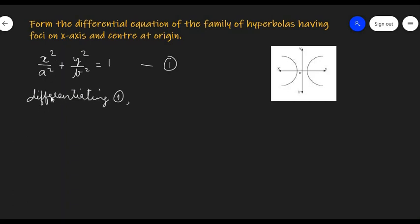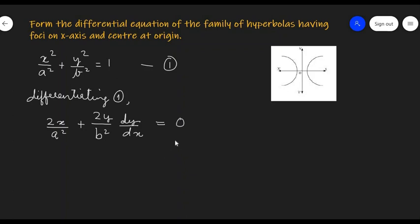Differentiating equation 1, we get 2x / a² plus (1 / b²) · 2y · dy/dx equal to 0. We can cancel 2 from all terms to get x / a² plus y / b² · dy/dx equal to 0. Let's call this equation number 2.